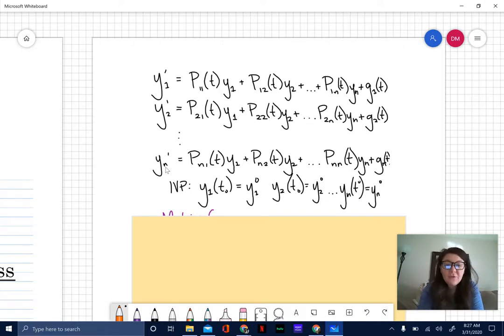If I have n number of first order linear differential equations where we have some P(t) being multiplied by y1, some other P(t) being multiplied by y2, on and on until we get down to a constant g(t), and also with any number of corresponding initial values, this is my system of differential equations.